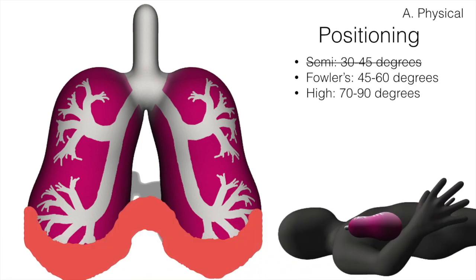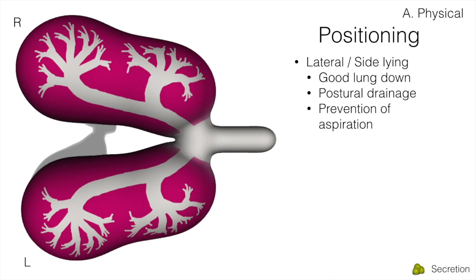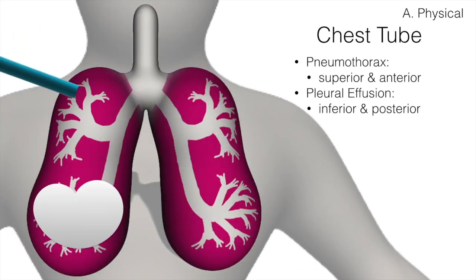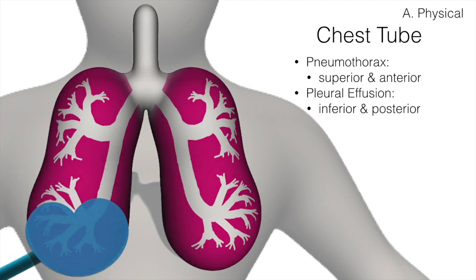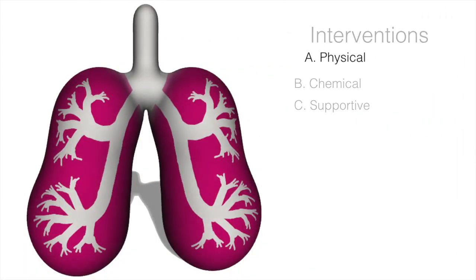For physical interventions: elevate the head of bed at least 45 degrees to help expand the lungs. If the patient has secretions, position them laterally — remember 'good lung down' — for postural drainage and to prevent aspiration. When suctioning, hyperventilate between suctions, suction for only 10 seconds with a total of 15 seconds including catheter insertion, and watch for increased intracranial pressure. Anticipate chest tube placement: superiorly and anteriorly for pneumothorax, inferiorly and posteriorly for pleural effusion.